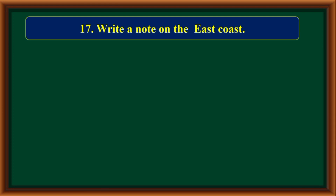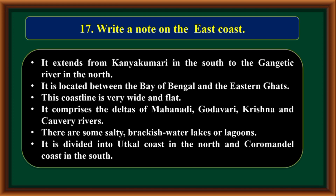Write a note on the east coast. It extends from Kanyakumari in the south to the Gangetic river in the north. It is located between the Bay of Bengal and the Eastern Ghats. This coastline is very wide and flat. It comprises the deltas of Mahanadi, Godavari, Krishna, and Kaveri rivers. There are some salty brackish water lakes or lagoons. It is divided into Utkal coast in the north and Coromandel coast in the south.